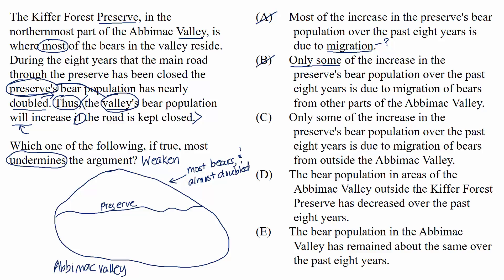Choice C sounds really similar to B: only some of the increase in the preserve's bear population over the past eight years is due to migration of bears from outside the Abamac Valley. This choice doesn't weaken the argument either, because even if only some of the increase is due to bears migrating from outside the valley, it's still possible that the road being closed is what sparked that migration. And so if the road stays closed, it's completely possible that the valley's bear population will increase — and that helps the argument.